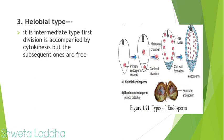After the first division in helobial type, subsequent divisions follow the pattern of nuclear division — only nuclei divide, forming many nuclei. At the end, every nucleus is surrounded by cytokinesis. So in helobial type, cytokinesis takes place only the first time; subsequently only nuclear division occurs, and cytokinesis occurs for every nucleus at the very end.